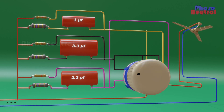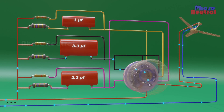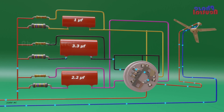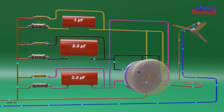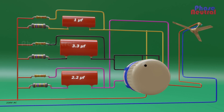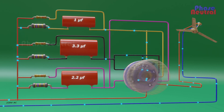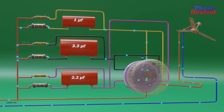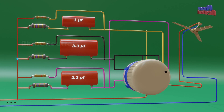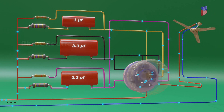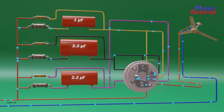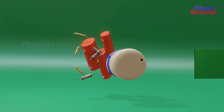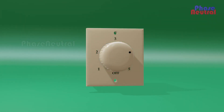When you move the knob to the second position, current flows through the 3.3 µF capacitor. When the capacitor value increases, the reactance of the capacitor decreases, so the fan runs faster than in the first position. In the third position, current flows through the 3.3 µF and 1 µF capacitors, so the fan runs faster than the second position. In the fourth position, current flows through all capacitors, so the fan runs faster than the third speed. Nowadays, step type electronic fan regulators are the most commonly used regulators because of their small size and energy-saving technology.